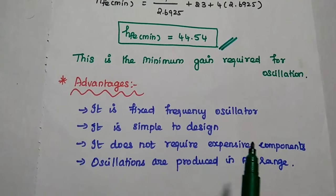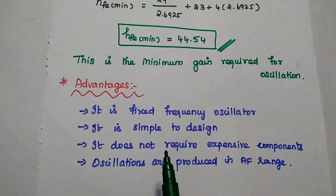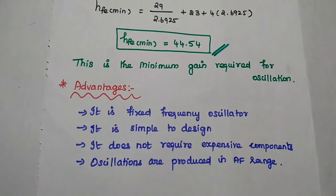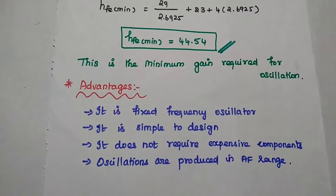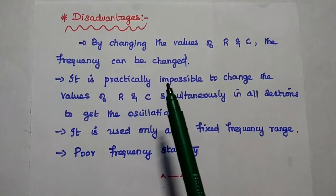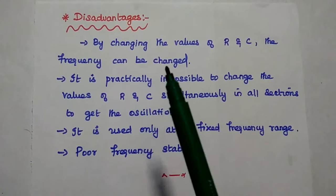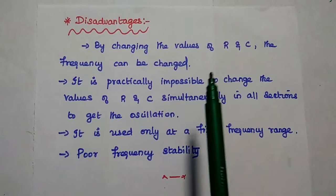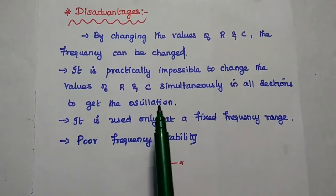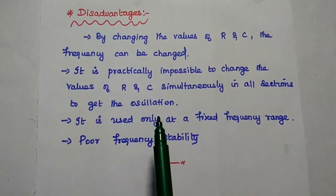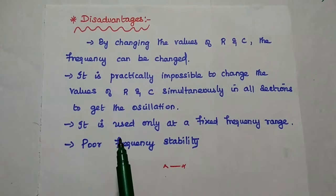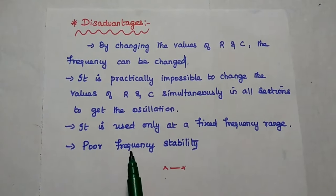Advantages of RC phase shift oscillator: it is a fixed frequency oscillator, simple to design, does not require expensive components — just resistors and capacitors — and oscillations are produced in the audio frequency range. The major disadvantage is that it is a fixed type oscillator. If you want to change the frequency, you have to change the resistor and capacitor values simultaneously in all three sections, which is practically impossible. Therefore, it is only used at a fixed set frequency and has very poor frequency stability.